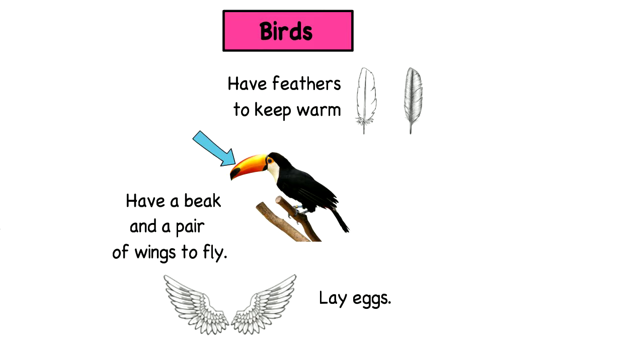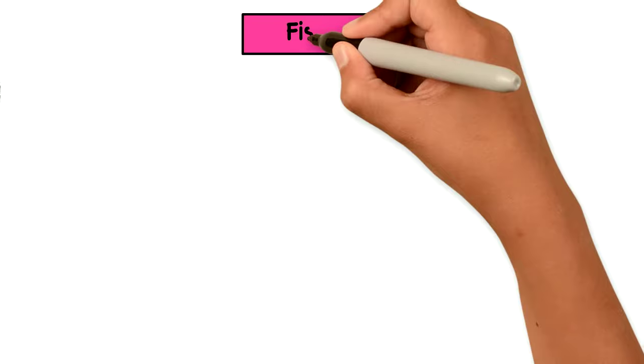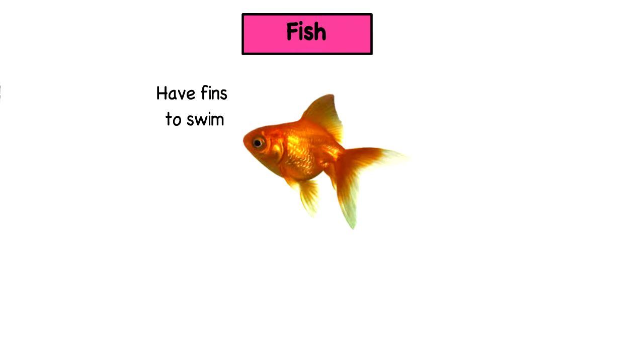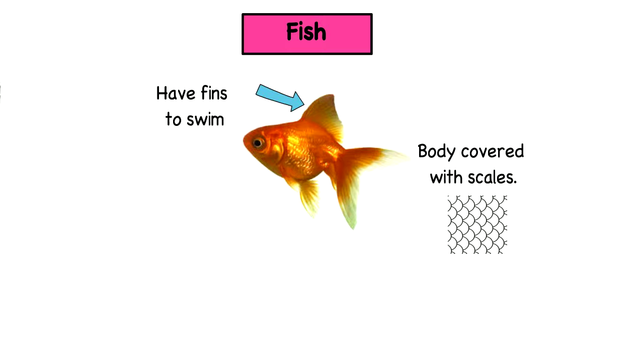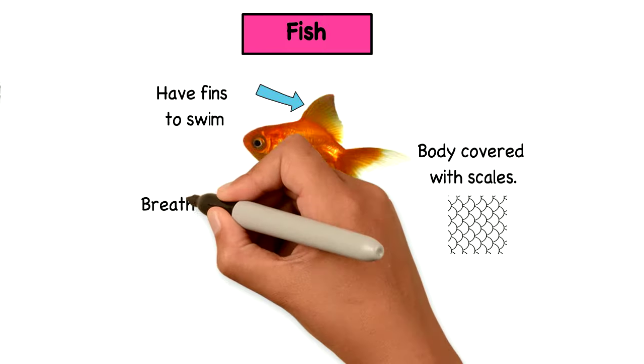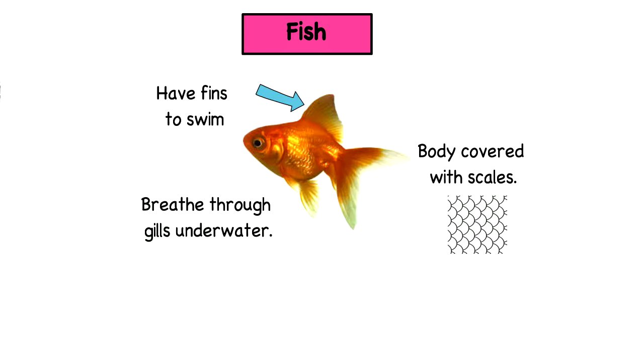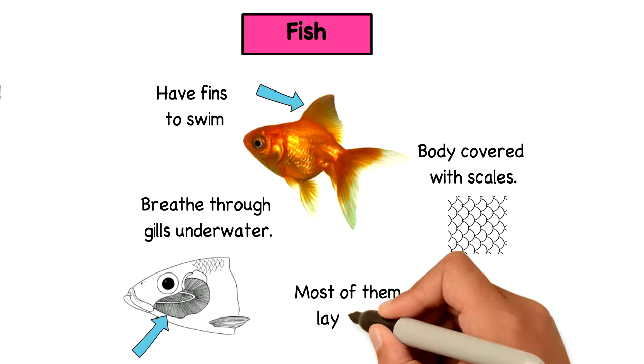Fish. They have fins to swim. Their bodies are covered with scales and they breathe through gills underwater. Most of them lay eggs to reproduce.